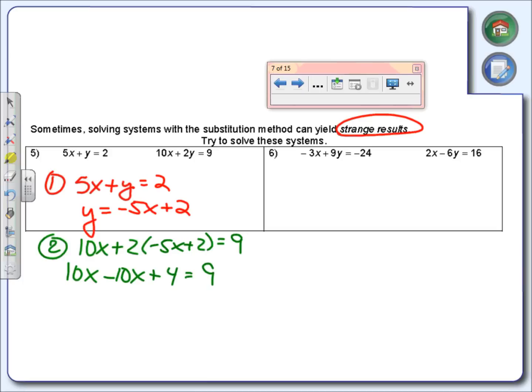Let's use some distributive property. 2 times negative 5x is negative 10x. 2 times 2 is going to give me a 4, and of course it still equals 9. Now I need to combine like terms. I've got 10x minus 10x. What is 10x minus 10x? 0x. There are no more x's. They're all gone. So I've got 4 equals 9.